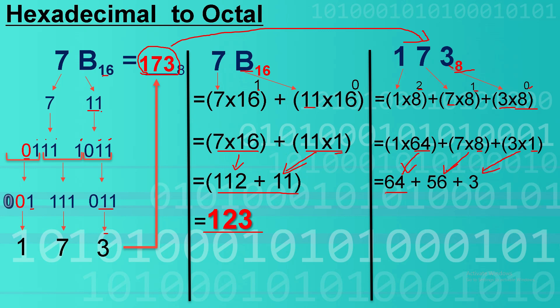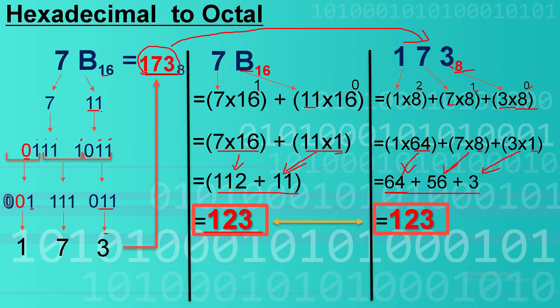We add these three numbers together. Our answer is 123 — the same as before. Therefore, our answer 173 octal is equivalent to 123 decimal. That's it, we're done. Thank you.